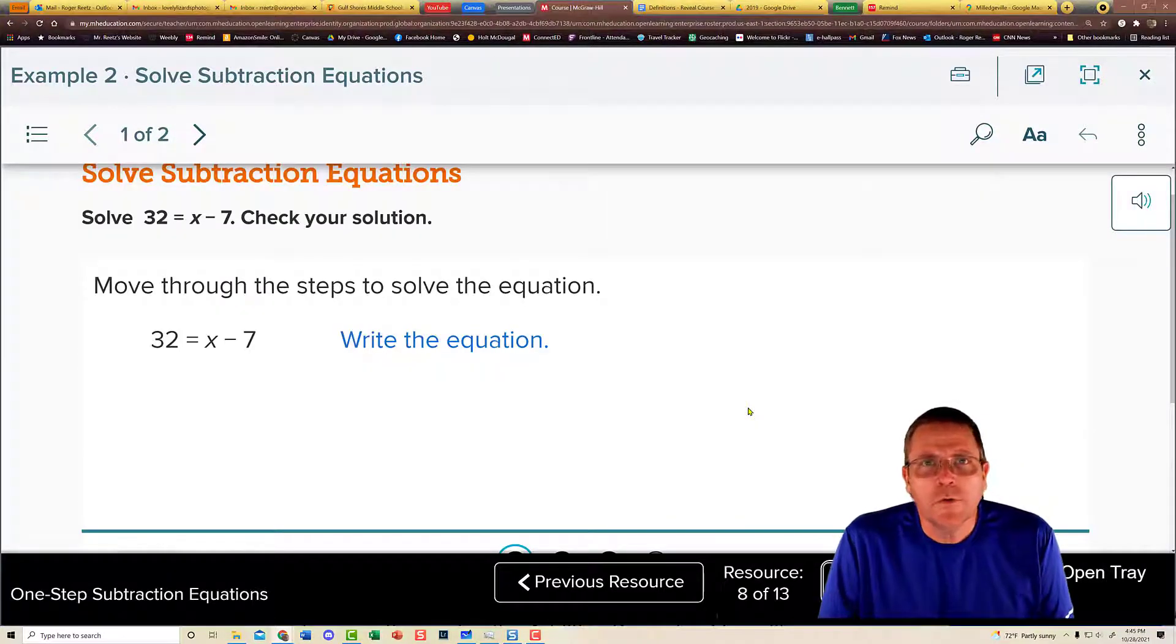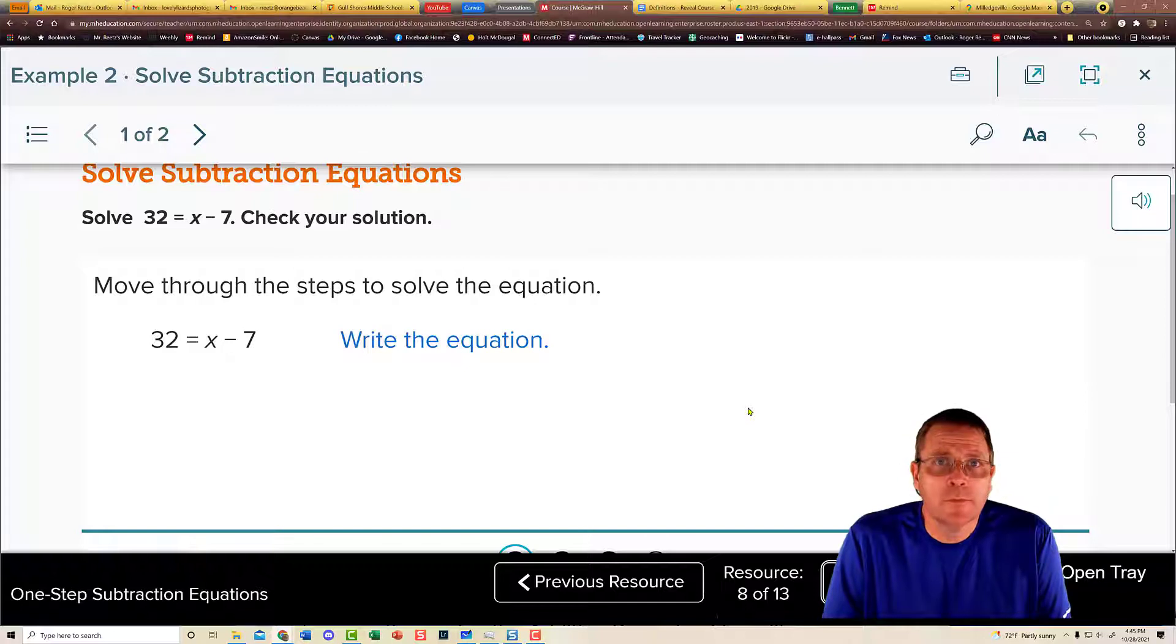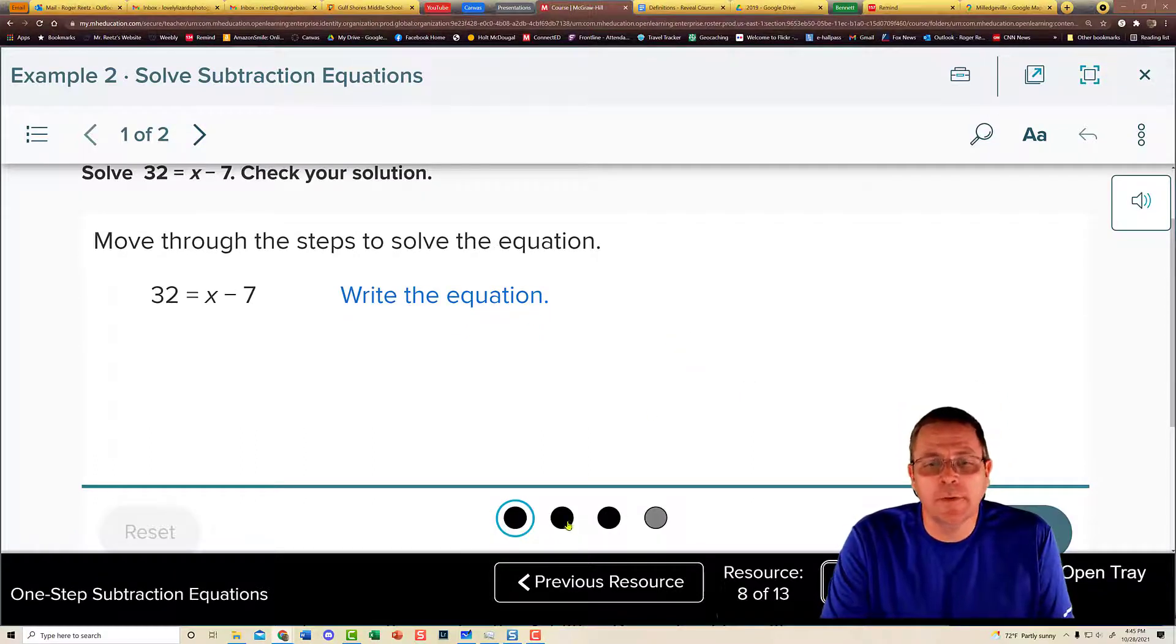So let's look at this equation here. We have 32 is equal to x minus 7. The final goal of any equation? Isolate your variable. What's your variable? It's x. Who's his friend? His friend is 7. And what is 7 doing to x? It is subtracting it. So what's the opposite of minus 7?